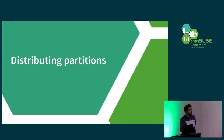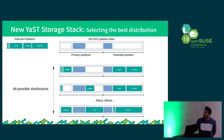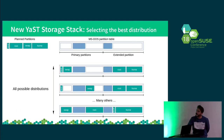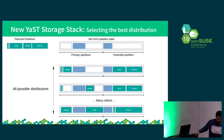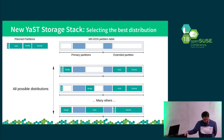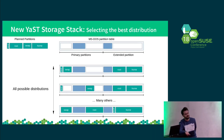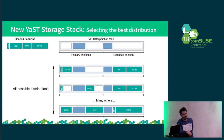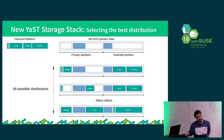Once we have made enough space to create all the planned partitions, the next step in the algorithm consists of distributing all the planned partitions into the free spaces. This task is more complex than it looks, because we have to take into account several restrictions — for example, if we are working with an MS-DOS partition table, we cannot create more than three primary partitions. We also have to consider the alignment of the partitions and so on.